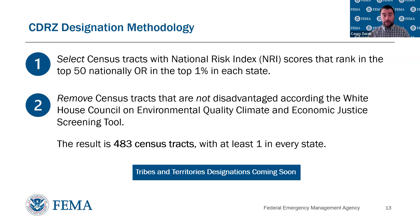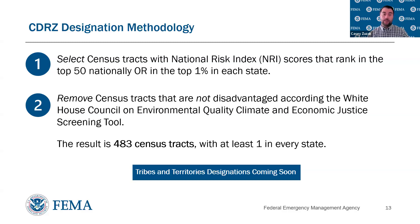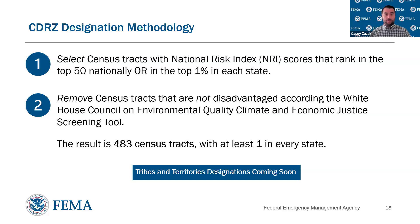In our initial round of designations, we first identified census tracts using the National Risk Index that ranked in the top 50 nationally or top one percent within each state — just over 800 census tracts. From there we removed any census tract not identified as disadvantaged by the White House Council on Environmental Quality's Climate and Economic Justice Screening Tool. We also used any land area overlap because the NRI uses 2020 census tract vintages while CEJST still uses 2010 census tracts — census tracts are dynamic and change — so we used land area overlap as recommended by the Census Bureau.